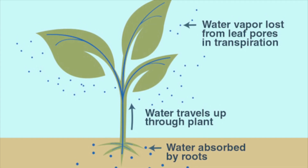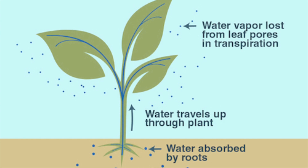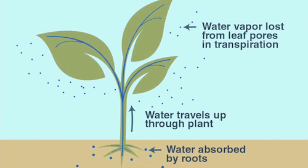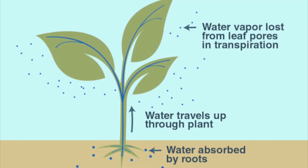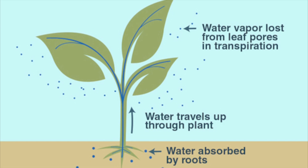The transpiration stream is driven by the evaporation through the leaves, and therefore anything that affects the rate of evaporation will also affect the rate of transpiration. Next we need to look at the effect of the environment on transpiration.